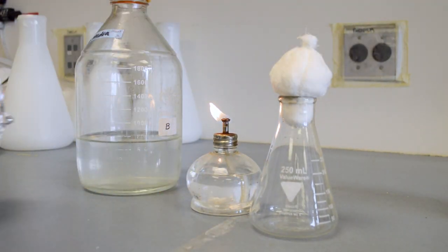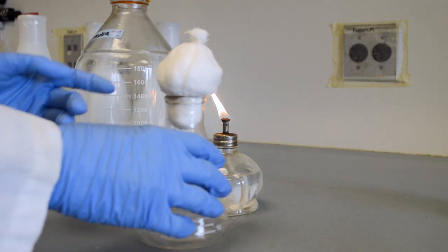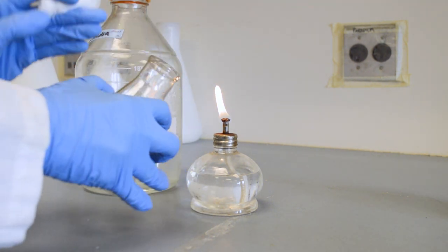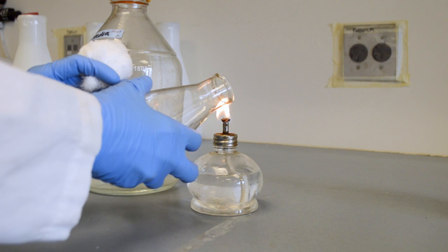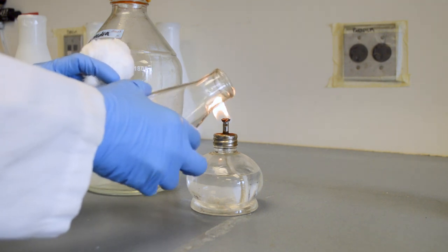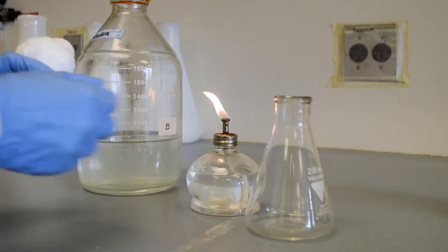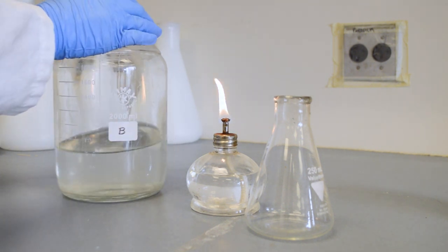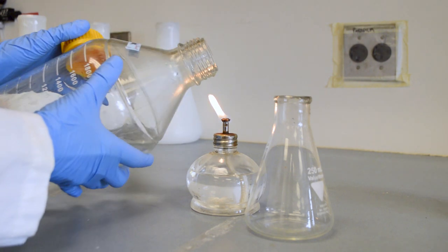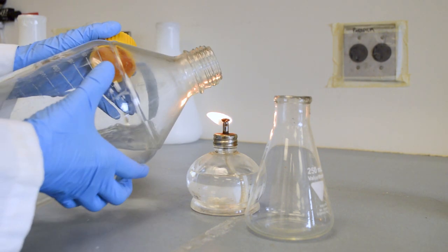Next remove the cap and stopper from your flask. Once removed, flame the opening. You want to place the flask close to the flame and be careful not to move anything above its open mouth. Set the flask down and then open the media bottle. Before we pour the media into the flask, we want to flame the opening of our media bottle as well.